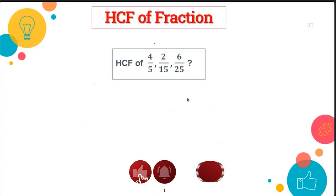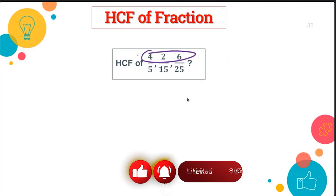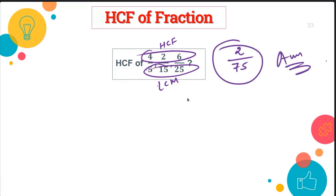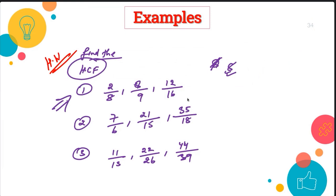Let's solve the question. For the given fractions, we find the HCF of the numerators and the LCM of the denominators. The answer comes out to 2 upon 75. Solving the first question gives 2 upon 72, and everybody got the same answer.